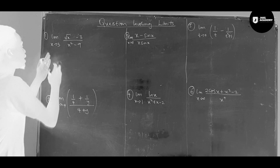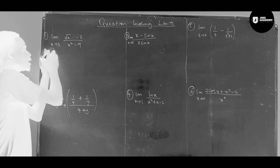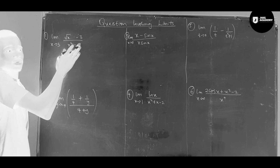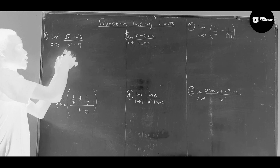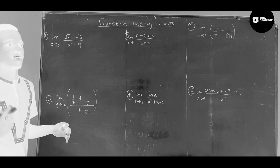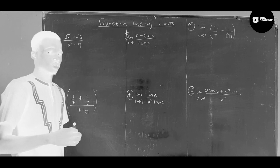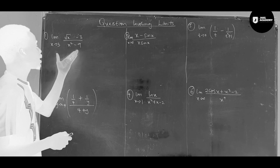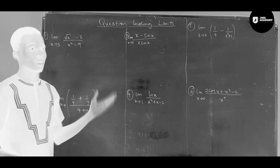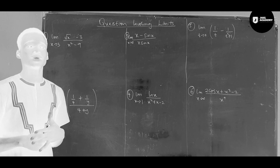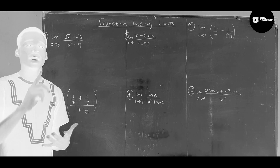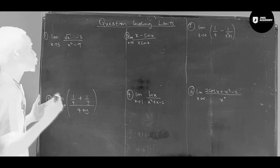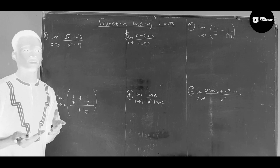If you apply x equals 3 directly, you'll find out that the numerator gives 0: 3 squared is 9, and 9 minus 9 is 0. When the numerator is 0 and denominator is 0, we get an indeterminate form — and that is what we do not want. When we find this, we try another approach.